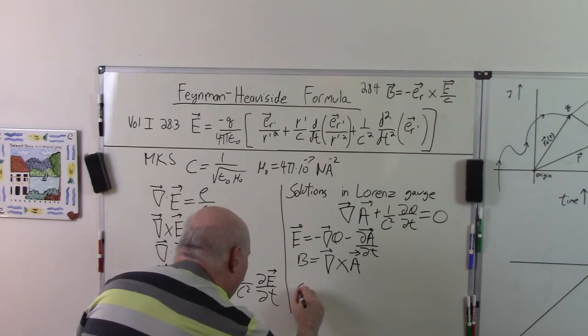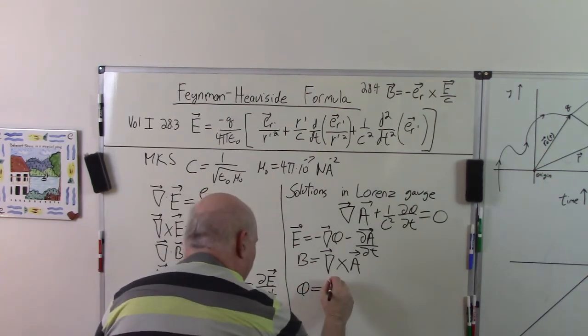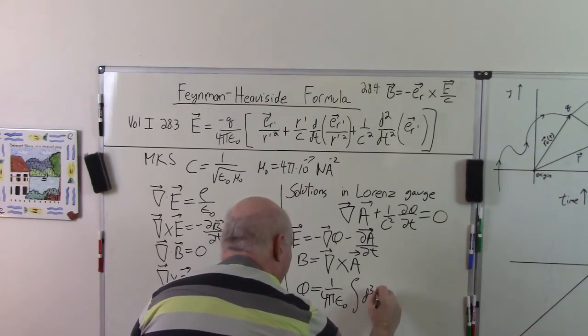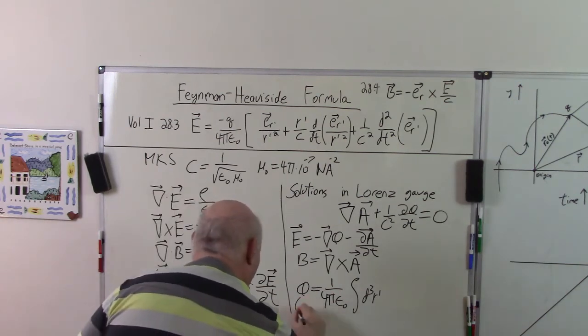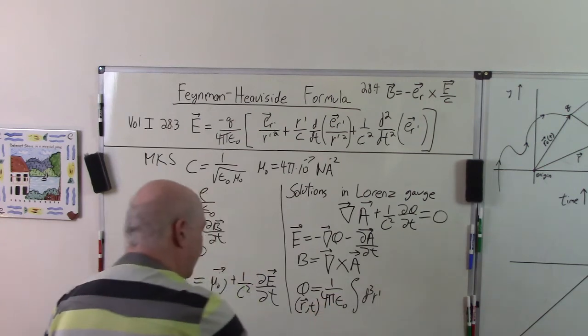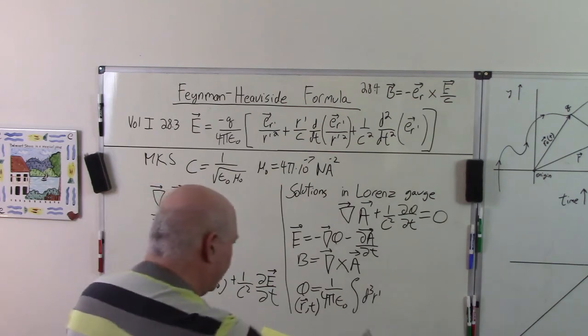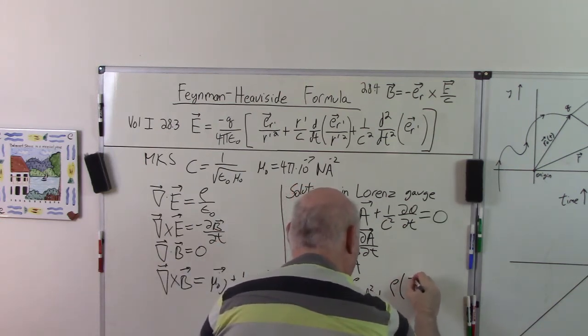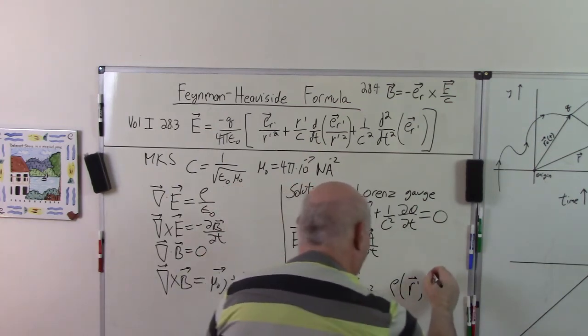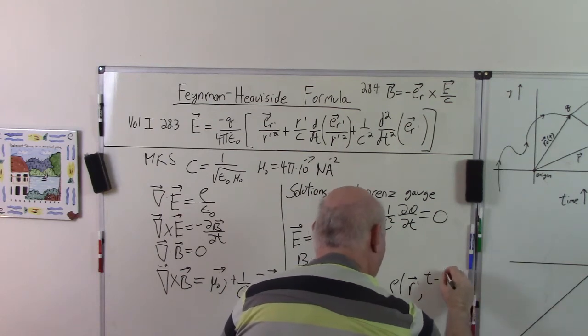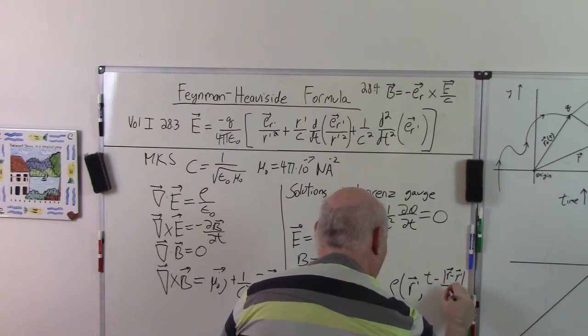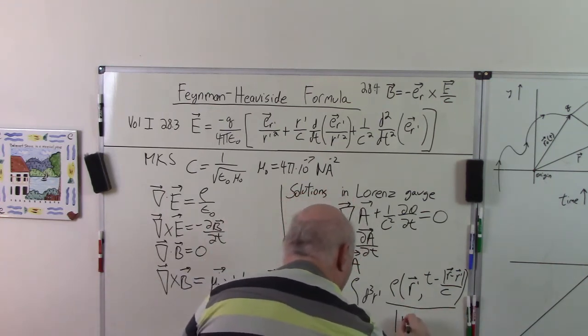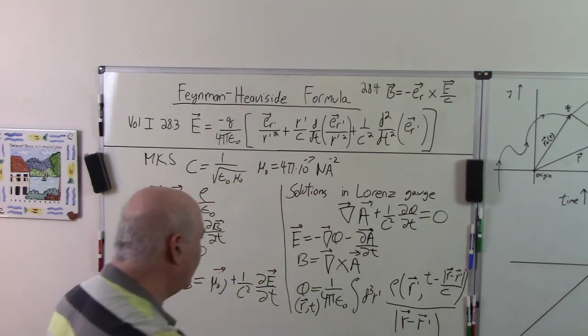The solutions. Now the scalar potential, phi of R and T, this is the position where the field is measured, this is the time, is given by 1 over 4 pi epsilon_0, the integral over all space D cubed R prime of the charge density at R prime but not at time T. This is what's called the retarded time: T minus absolute value of R minus R prime over C. Rho divided by the absolute value of R minus R prime. So this is the scalar potential.